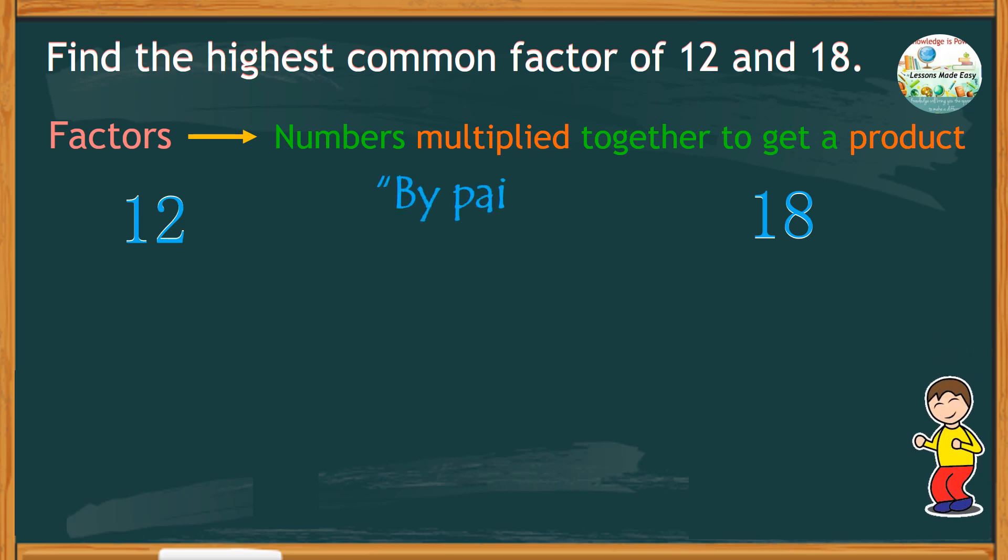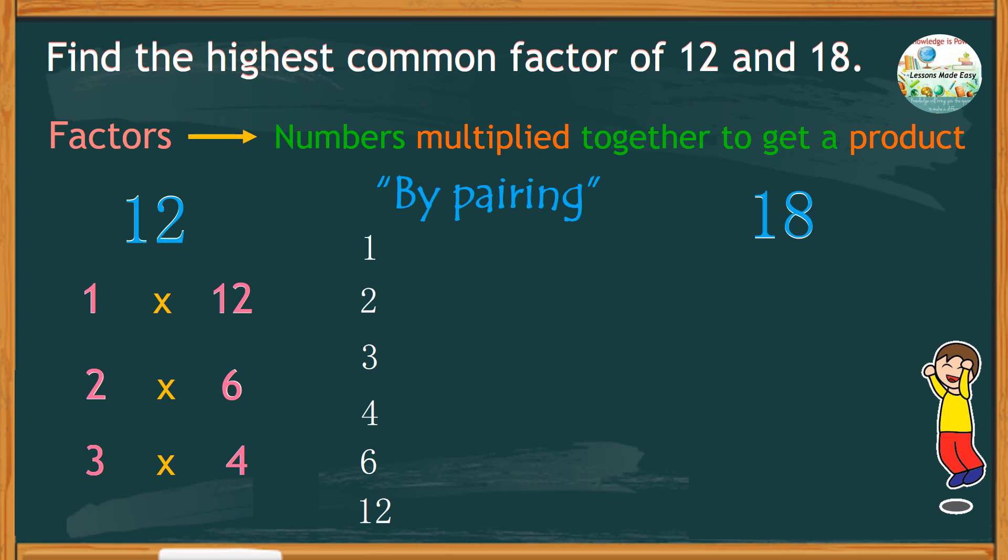Let's try the pairing method with this one. Starting with 1 times 12, or 12 times 1, 2 times 6, or 6 times 2, 3 times 4, or 4 times 3. From this pairing, we list down the factors of 12. We have 1, 2, 3, 4, 6, and 12.